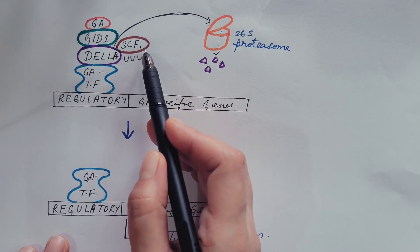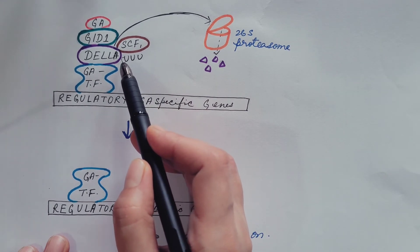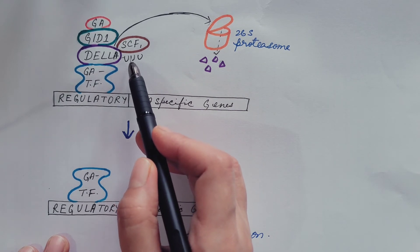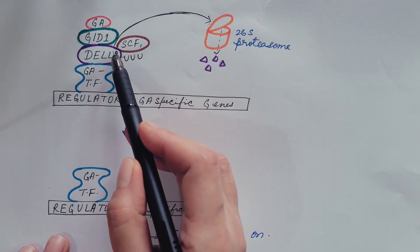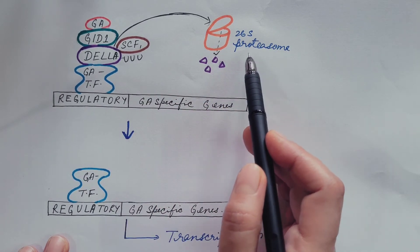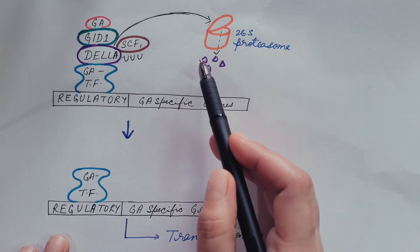This F-box protein catalyzes ubiquitination of DELLA. Due to the ubiquitination, now DELLA is degraded by 26S proteasome. So it is degraded.